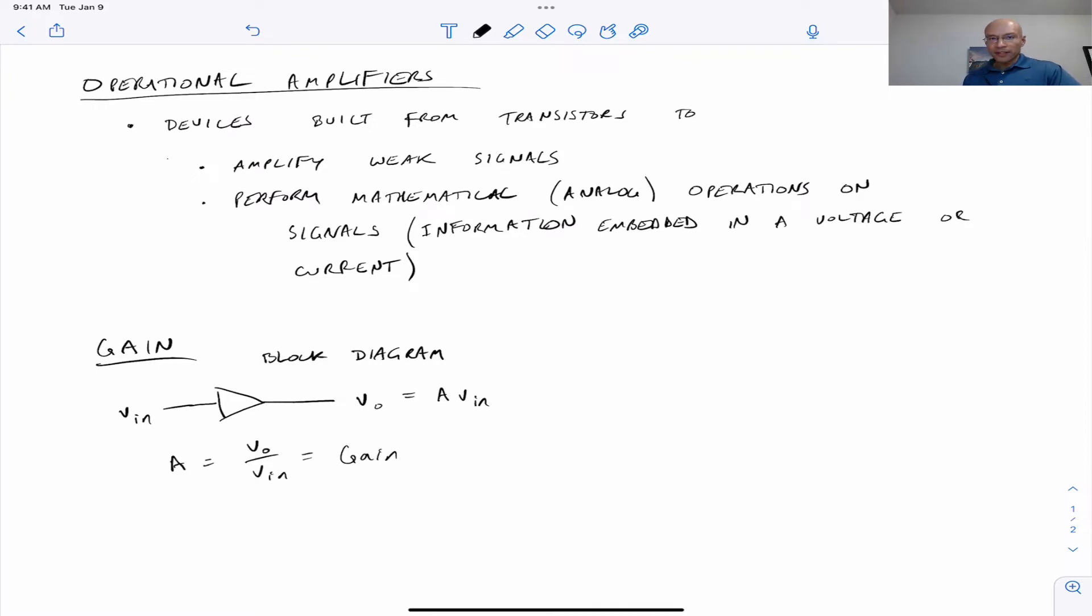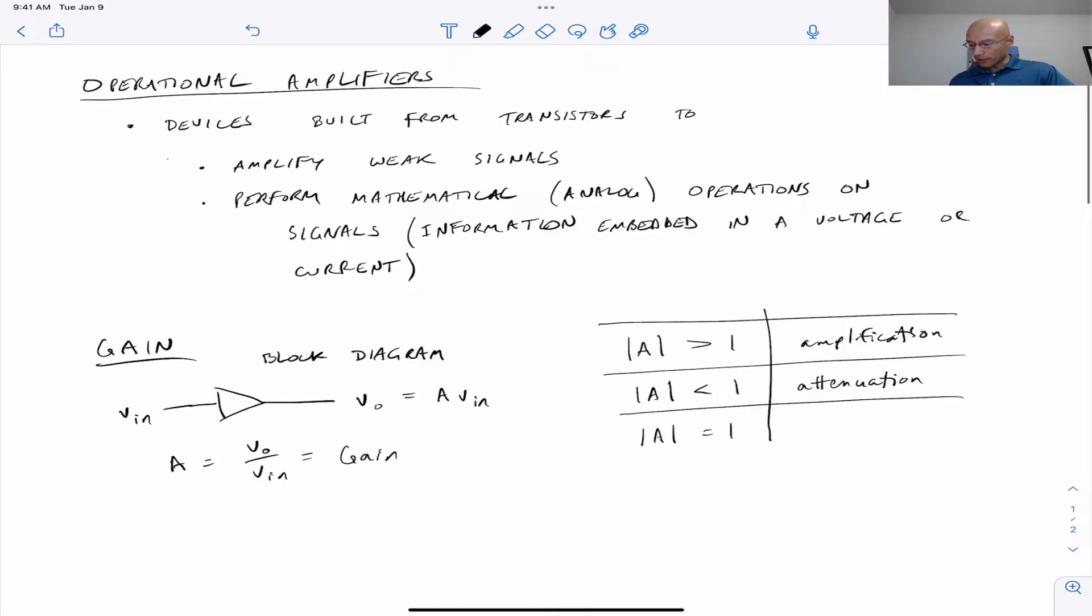The gain is a measure of how much amplification the amplifier gives. So if A is greater than 1 we have amplification. Let's put here absolute value of A greater than 1. On the other hand if the absolute value of A is less than 1 then we have attenuation. So this makes signals smaller. If A is equal to 1 it's neither amplification or attenuation. We might call that just a buffer. It doesn't do anything.